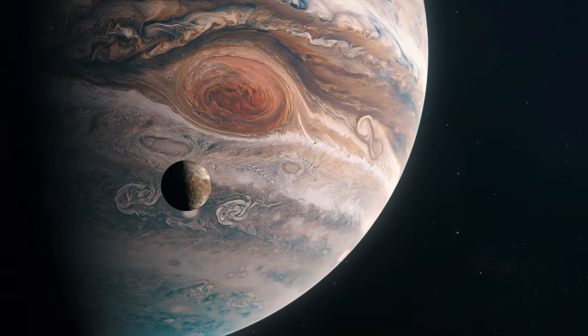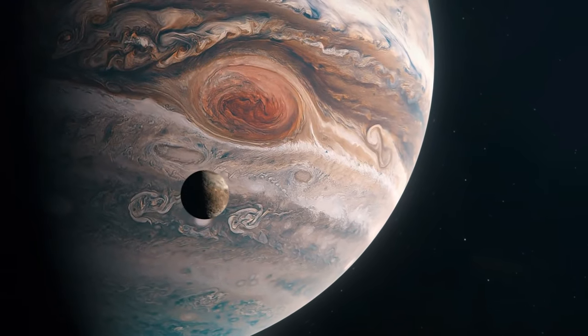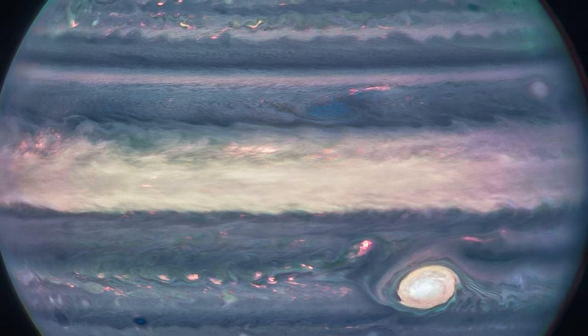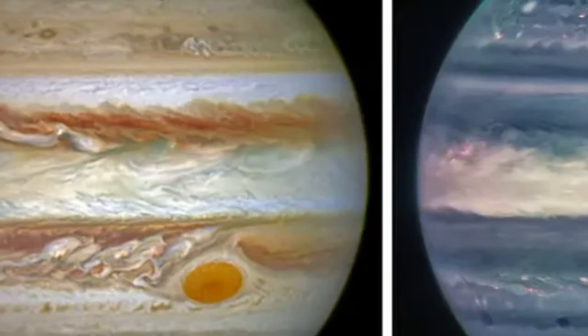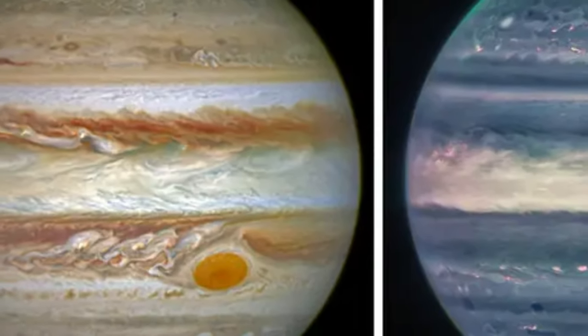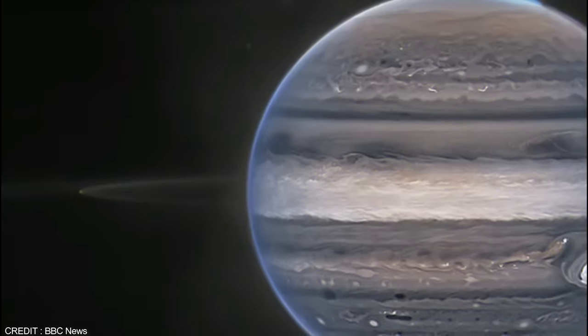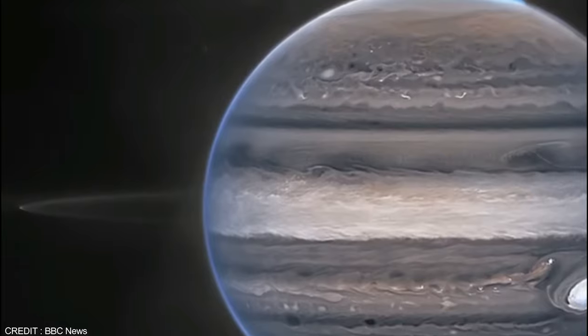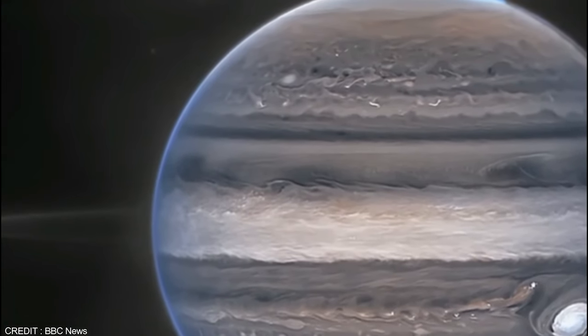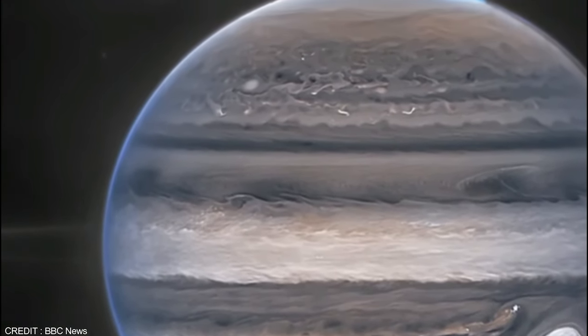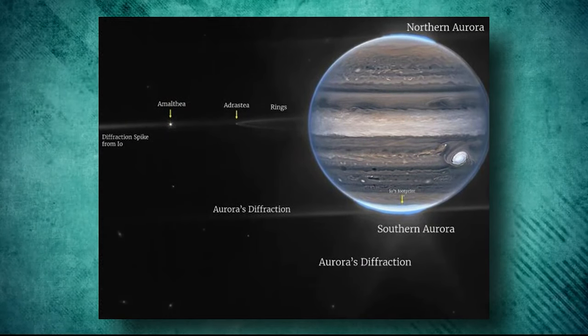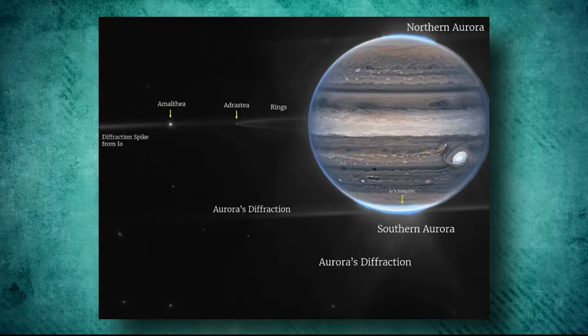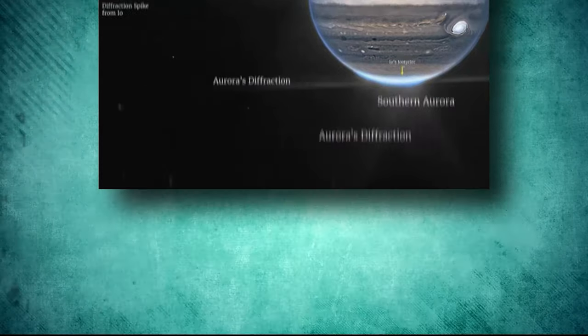Jupiter, the largest planet of the solar system, has always fascinated. The JWST captured some of the most detailed images of Jupiter ever taken, revealing intricate details of its stormy atmosphere and glowing auroras. One image captured by the JWST shows a close-up of Jupiter using three different filters to capture details of its swirling clouds and the bright auroras near its poles. The Great Red Spot, a massive storm that has been raging for centuries, is also visible in the image.